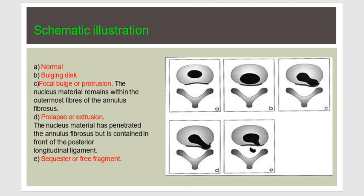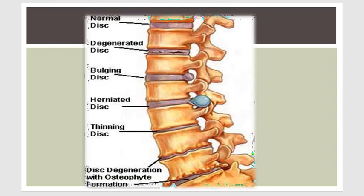This schematic illustration shows: A is normal, B is a bulging disc, C is focal bulge or protrusion, D is prolapse or extrusion, and number five is sequestration or free segment. This picture shows a normal disc above, then a degenerated disc, then a bulging disc, then a herniated disc that has gone beyond into the posterior part with thinning of the disc.